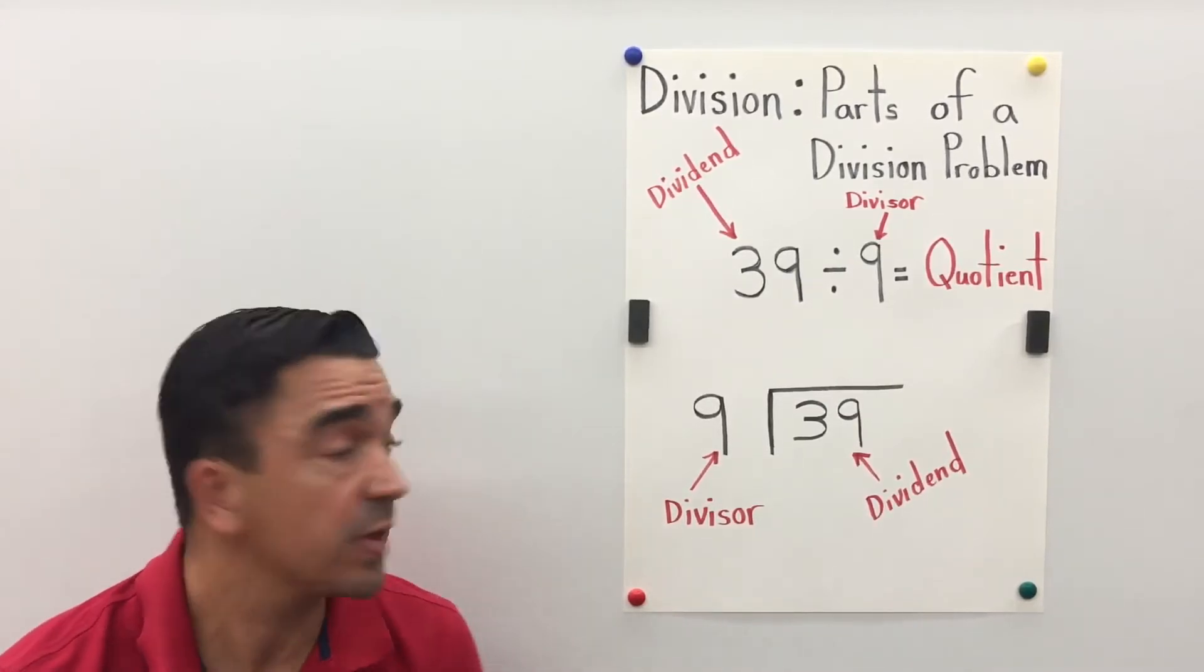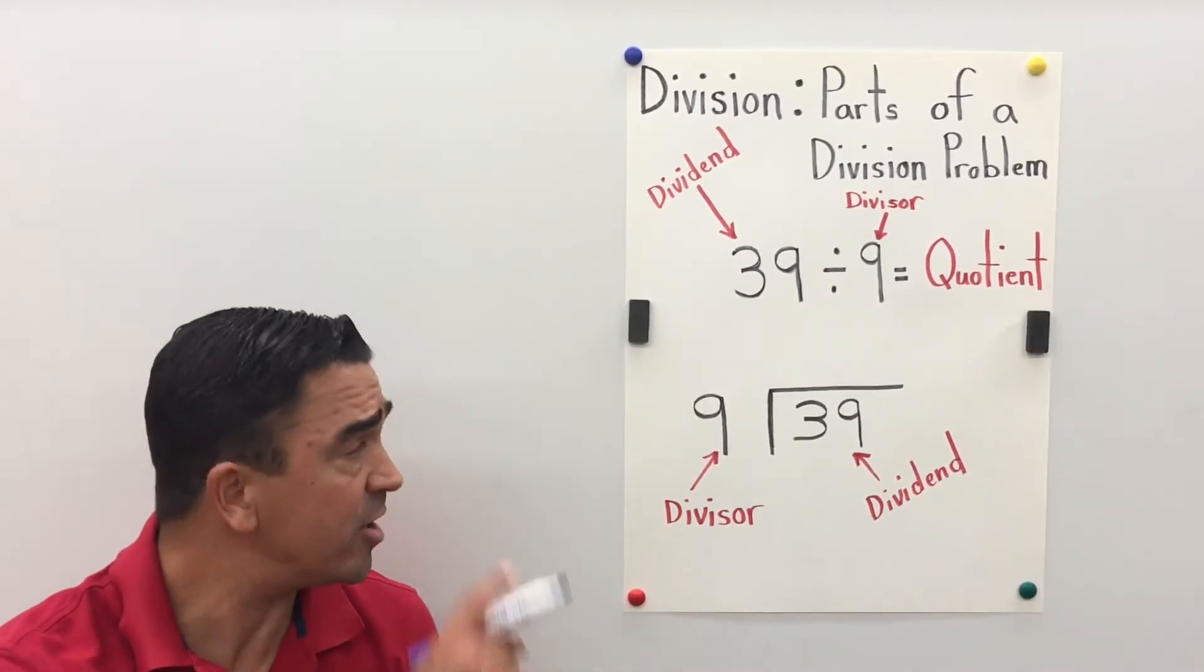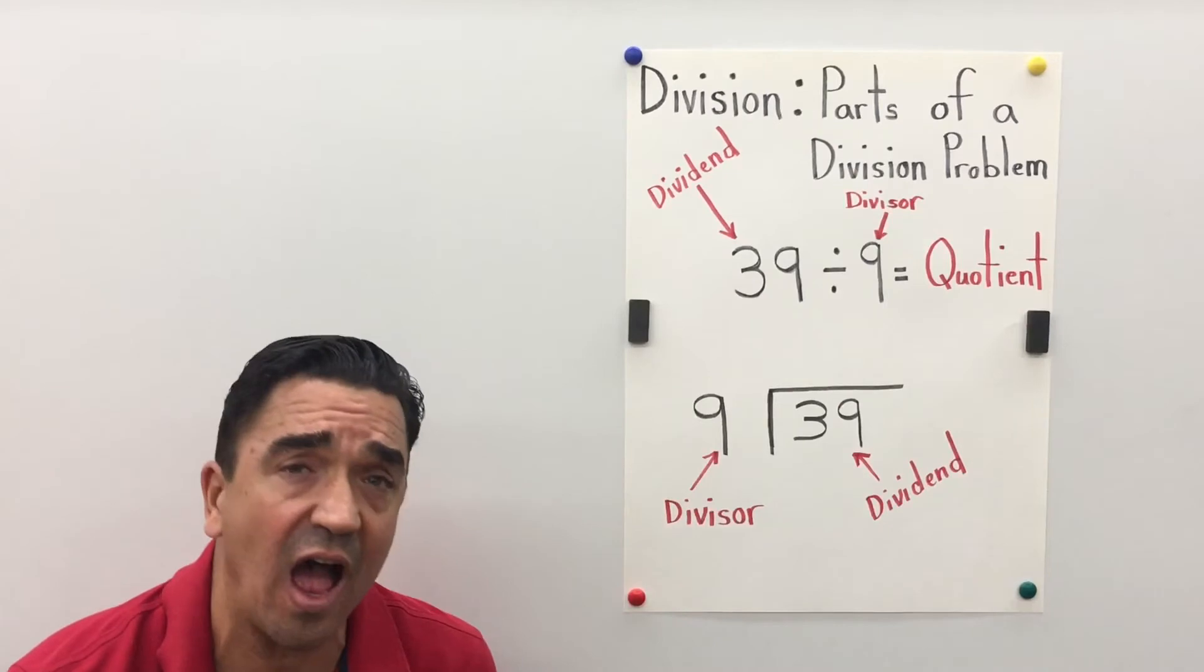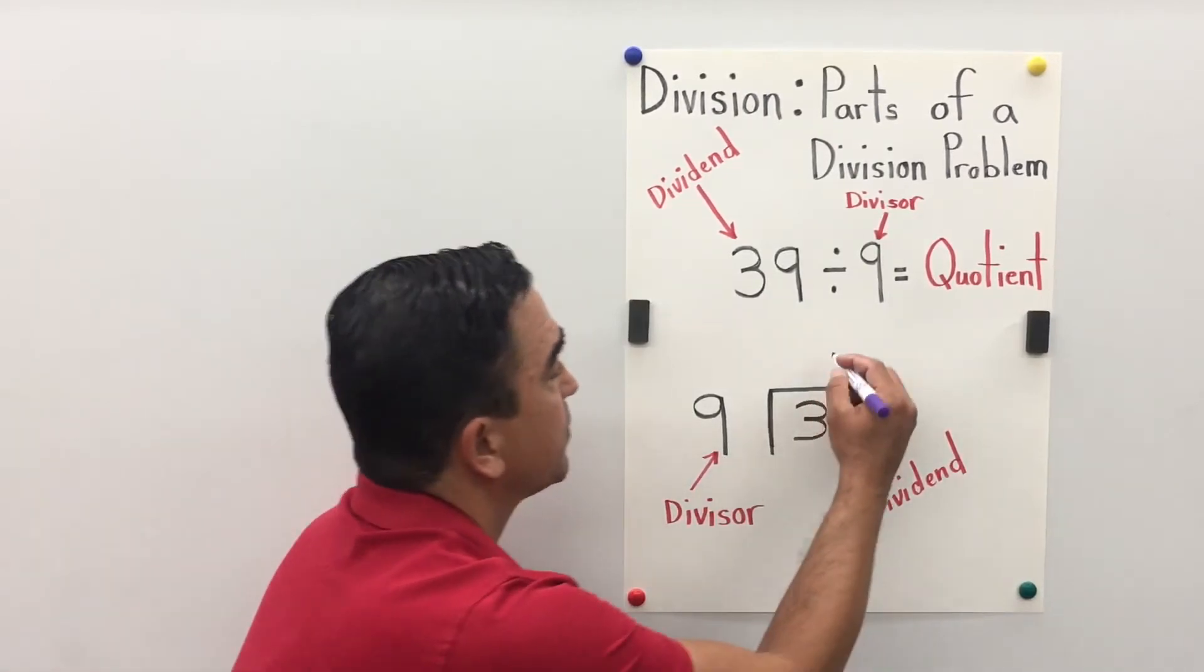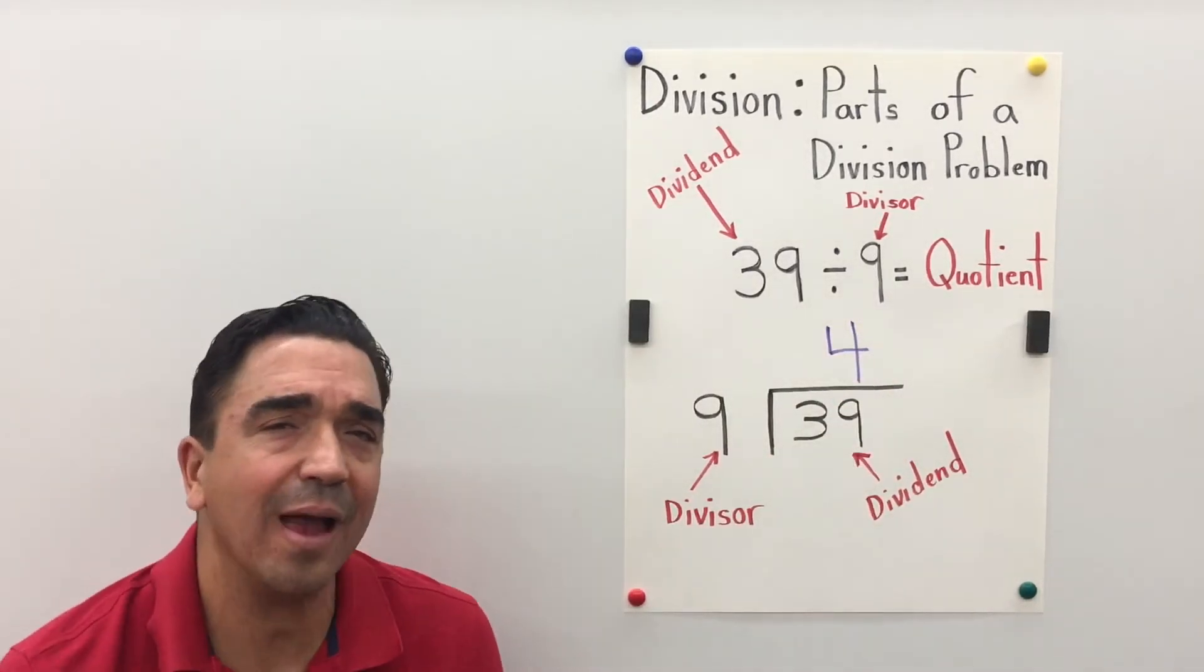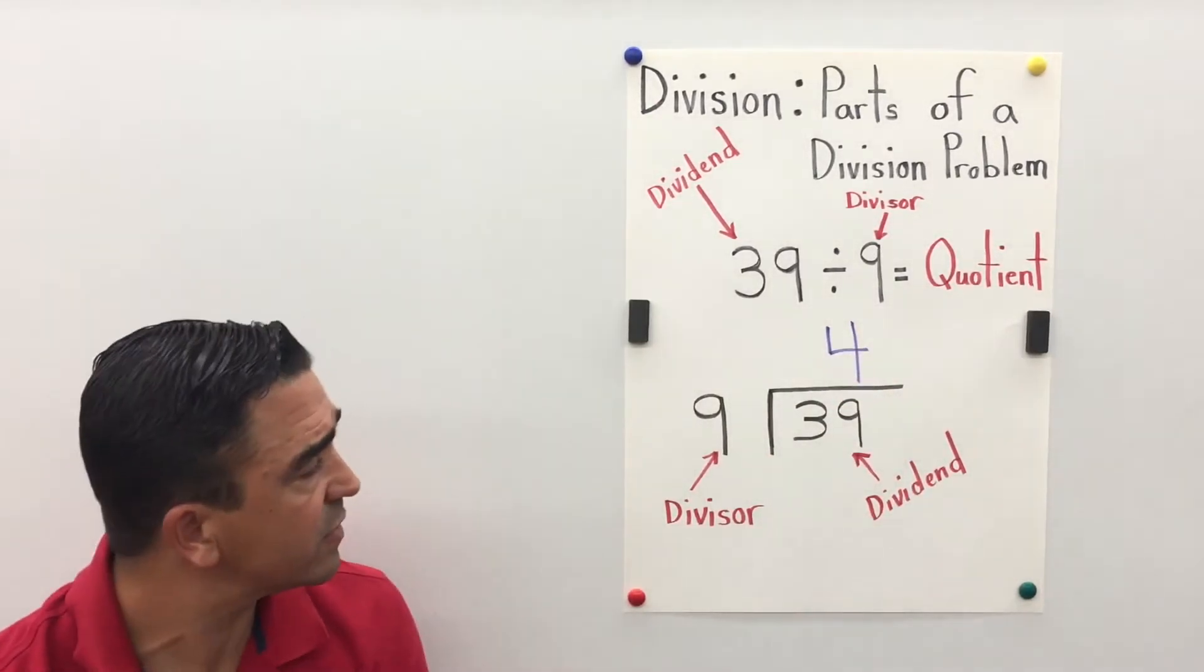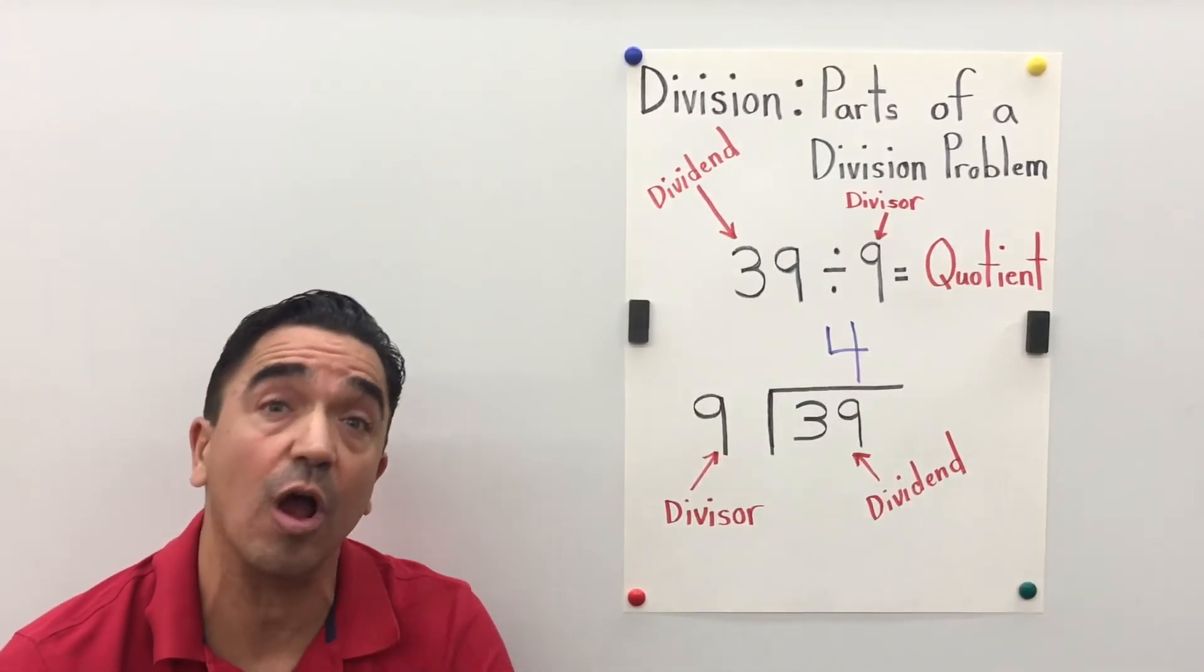Let's do it. 39 divided by 9. I know 9 can go into 39 four times, but 4 times 9 is 36. That leaves 3, so we have a remainder of 3.